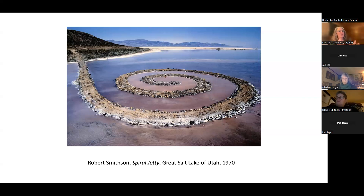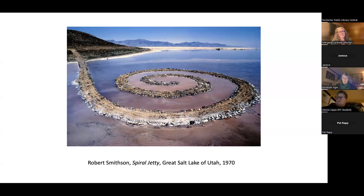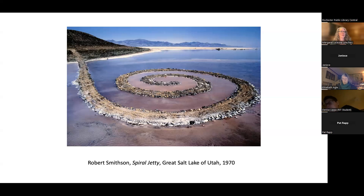While the Spiral Jetty resembles a familiar symbol, making it in the landscape seemed quite futuristic. Smithson, along with other artists such as Nancy Holt, Michael Heizer, and Walter De Maria, were all creating work using stone, rock, and sand as part of this land art movement.